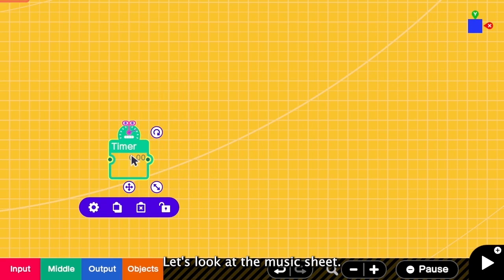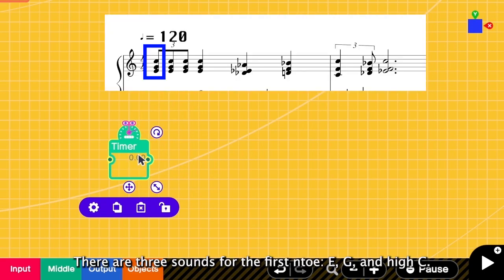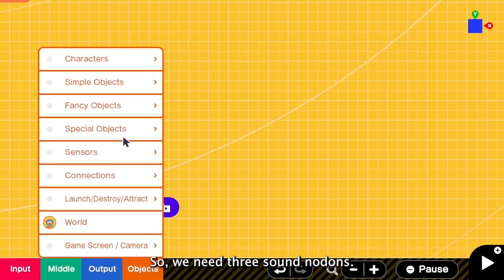And let's look at the music sheet. There are three sounds for the first note, which are E, G and high C. So we need three sound nodons.